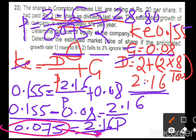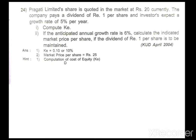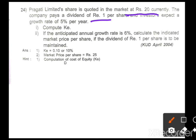Next homework problem: Pragati Limited shares are quoted at market price 20 rupees. The company currently pays dividend of rupees 1 per share, and investors expect a 5 percent growth rate. Compute Ke. Here, the dividend of 1 rupee is a current year dividend, so use D = 1 directly. With P = 20 and g = 0.05, Ke = 0.10 or 10 percent.